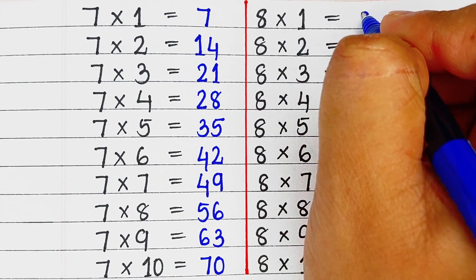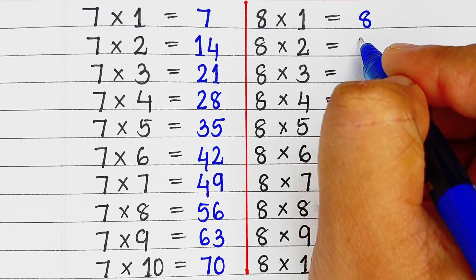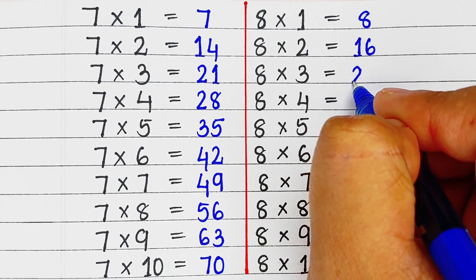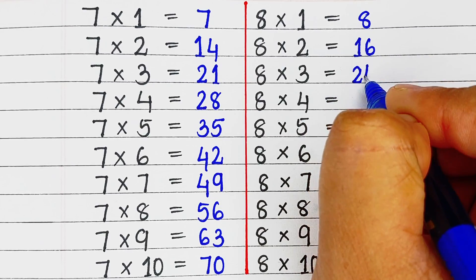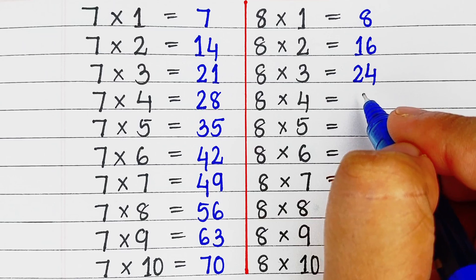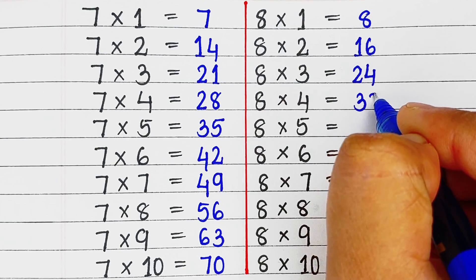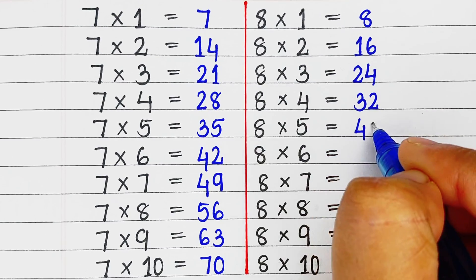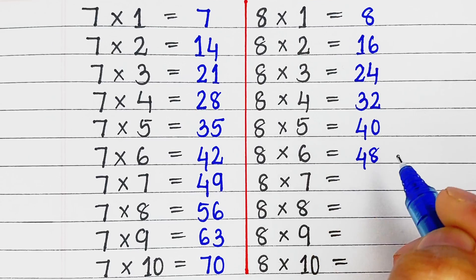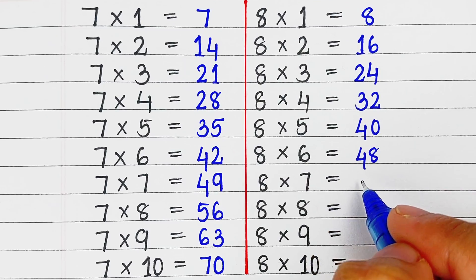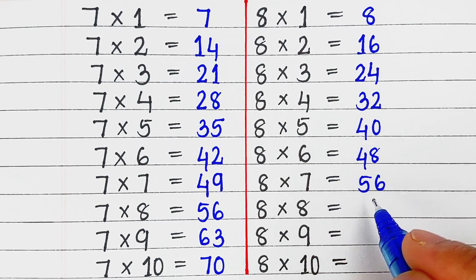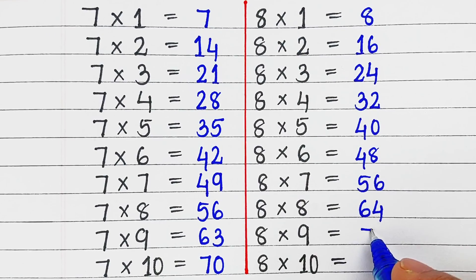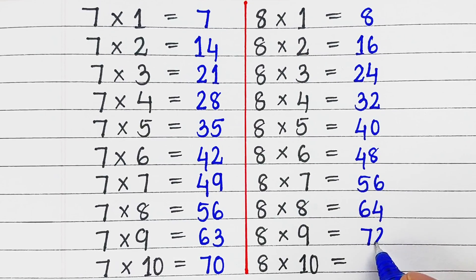Next is table of 8. 8 ones are 8, 8 twos are 16, 8 threes are 24, 8 fours are 32, 8 fives are 40, 8 sixes are 48, 8 sevens are 56, 8 eights are 64, 8 nines are 72, 8 tens are 80.